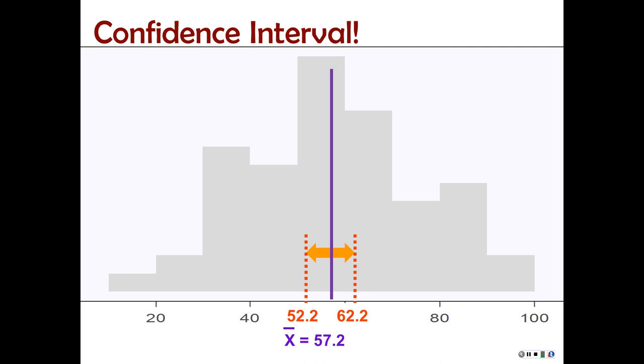Our sample mean was right there, and then we have the two numbers for our confidence interval. A lot of work, and when we get done, all we have is a sample mean and two numbers. That's the confidence interval.